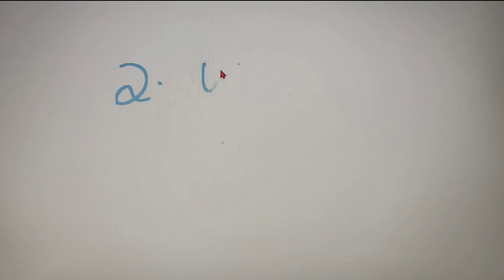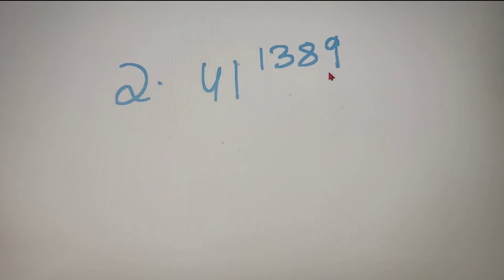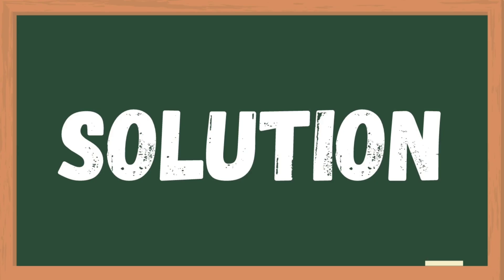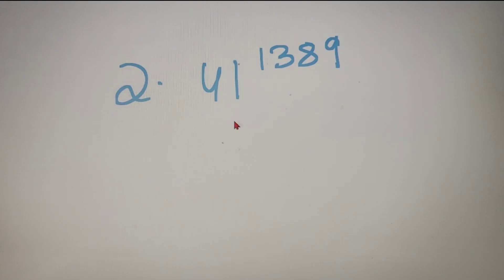For our second example, we have to find out the last two digits of 41 raised to the power 1389. Try to solve this question by yourself and then come back for the solution. I hope you have solved it — if not, let's find the solution.